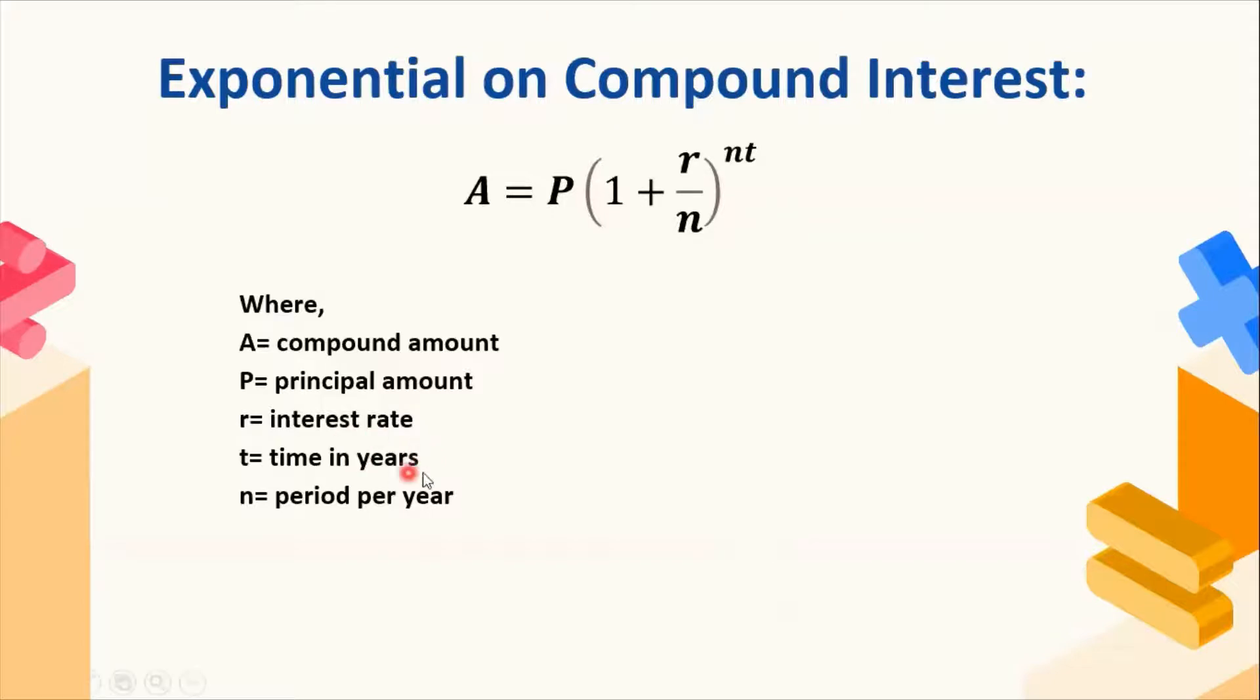t here is the total number of years, which should be expressed in years because interest rates are expressed that way. And n is the period per year. This is not the total number of compoundings over the life of the investment, but this is the number of compoundings per year.